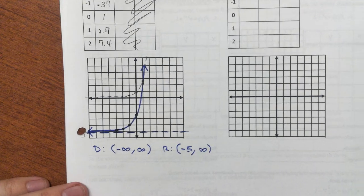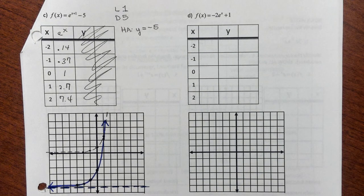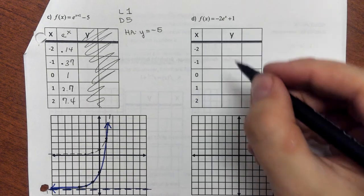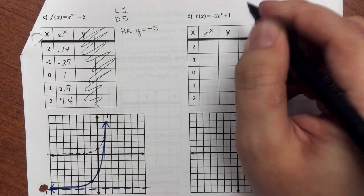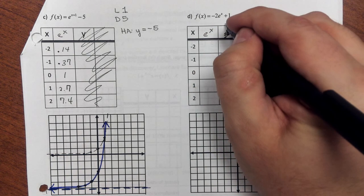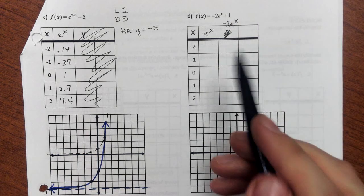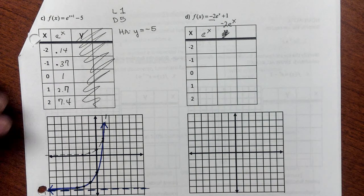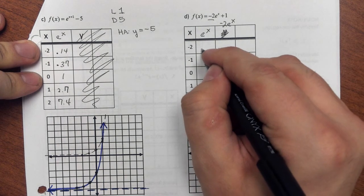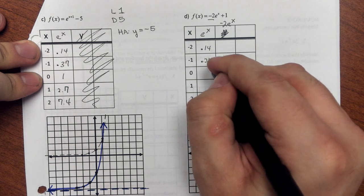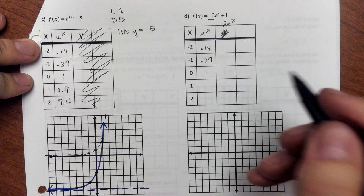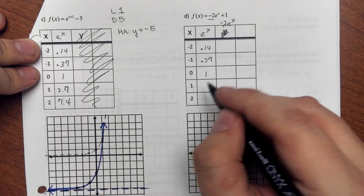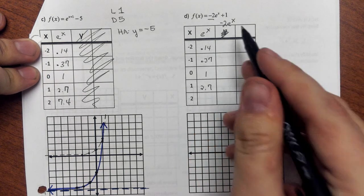Alright, I'm going to go ahead and do the last example that is right here. This one has a stretch and a reflection, which makes this somewhat trickier. So here, I actually will use three columns. I'm going to make a column for e to the x. And what I want to put in here is negative 2 times e to the x. Remember, that's how we do this if we have a reflection or if we have a vertical stretch or compression. So again, I start off with these same points.